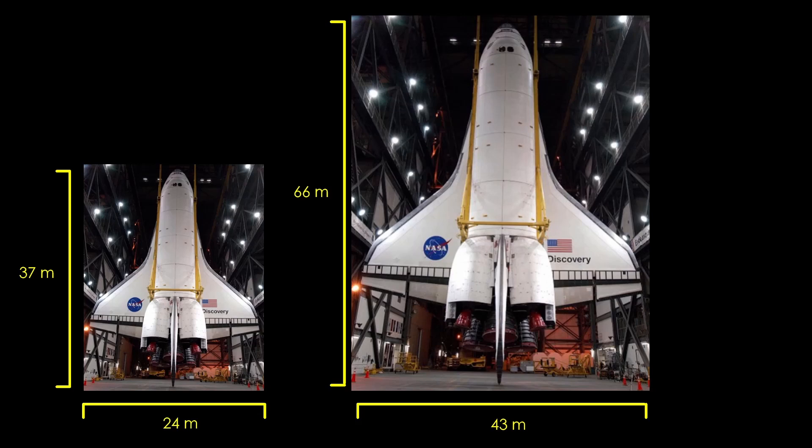This bigger orbiter still has the same performance as a small one. It can lift about 27 tons to low earth orbit, but it would get rid of the expendable external tank.